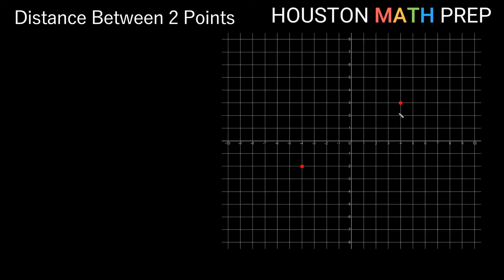Here I've got two points plotted in the xy-plane and if we want to find the distance between them — in other words the length of the straight line that goes from one point to the other — we're going to think about this like we did the midpoint, where we think of this as the hypotenuse of a right triangle.